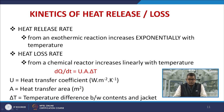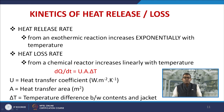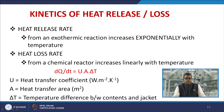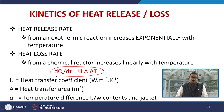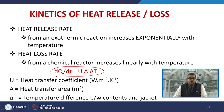Regarding the kinetics of heat release and loss: the heat release rate from an exothermic reaction increases exponentially with temperature. The heat loss rate from a chemical reactor increases linearly with temperature: dQ/dt = UA·ΔT, where U is the heat transfer coefficient (W·m⁻²·K⁻¹), A is the heat transfer area (m²), and ΔT is the temperature difference between reactor contents and the jacket.